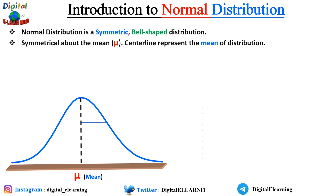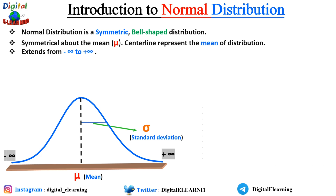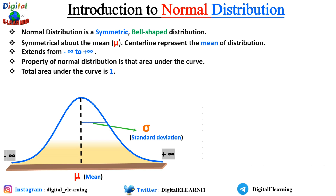The normal distribution is basically a symmetric, bell-shaped distribution — bell-shaped because it looks like a bell. It is symmetric about the mean mu, where the center line represents the mean of the distribution, and sigma represents the standard deviation, which is the distance from the mean. It extends from minus infinity to plus infinity, so the tails at the end of the normal distribution never touch the horizontal axis. The total area under the curve is 1, and half of it is 0.5 on each side, regardless of the values of mu and sigma.